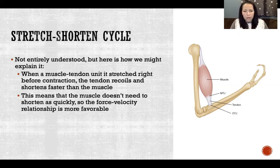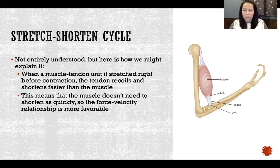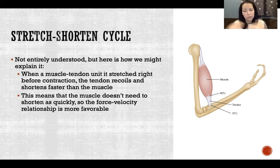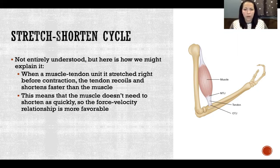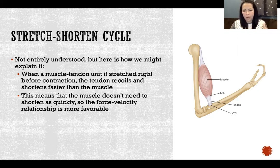When a muscle-tendon unit is stretched right before contraction — in the eccentric contraction right before the concentric — the tendon recoils and shortens faster than the muscle. Our muscle-tendon unit is elastic, meaning it has the ability to stretch and then recoil and return back to its original shape. So when we stretch it, especially the tendon, and then reverse, it will recoil just like a rubber band, like a slingshot effect. So as the muscle goes into the eccentric contraction and then reverses into the concentric, the tendon is recoiling faster than the muscle, producing an elastic recoiling effect.